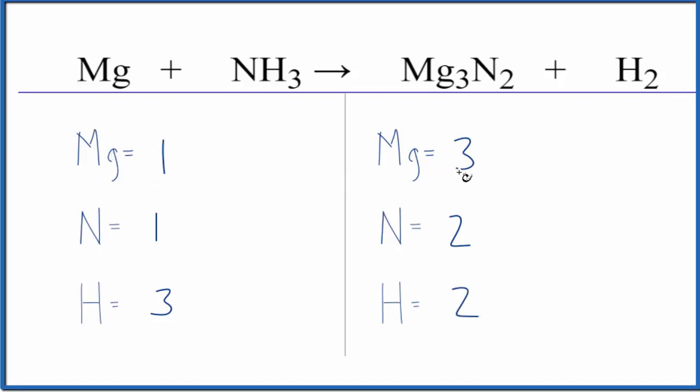Let's leave the magnesium to last, because it's all by itself, so we can just put a coefficient, and that'll be easy to balance. Why don't we try to fix the nitrogens first?